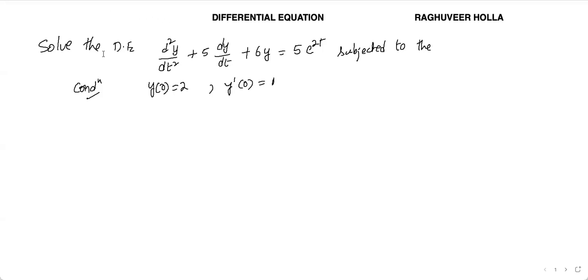Let us look at this second-order non-homogeneous differential equation. We have the initial conditions: y(0) = 2 and y'(0) = 1. We need to find the general solution for the given equation.